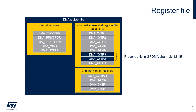Here is a brief description of the global registers. The SECCFGR and PRIVCFGR registers configure the security and privilege attributes of each channel. The RCFG-LockR register is used to lock the secure and privilege settings until the next reset. The MISR and SMISR are interrupt status registers for the non-secure and secure worlds.